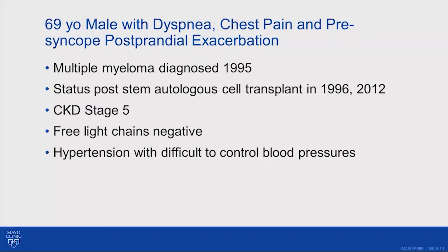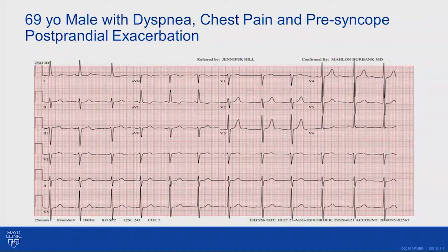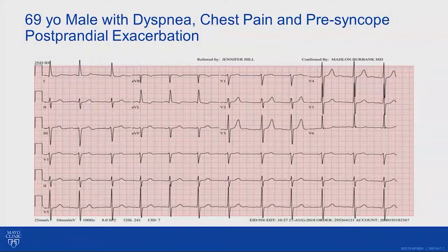I'm going to start with a case. A 69-year-old gentleman with dyspnea, chest pain, and presyncope — especially after eating a meal before his walk with his dog. He has a complicated past medical history of multiple myeloma diagnosed in 1995, status post autologous stem cell transplant in 1996 and again in 2012. He has end-stage kidney disease. His free light chains were checked and were negative, and he's been very hypertensive with difficult-to-control blood pressures. His ECG may be a borderline case for LVH, which might be somewhat reassuring given his history of multiple myeloma and negative light chains.